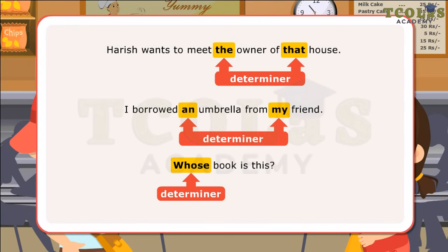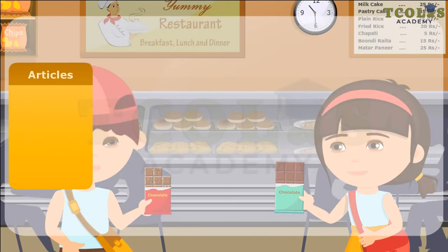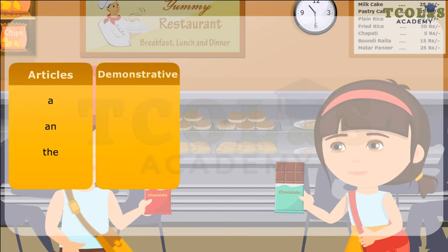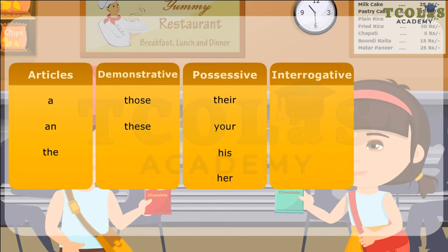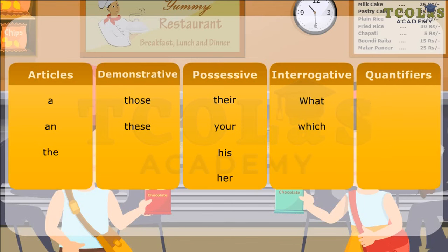Here is a list of some determiners: Articles — A, An, The; Demonstrative — Those, These; Possessive — Their, Your, His, Her; Interrogative — What, Which; Quantifiers — Few, Several.